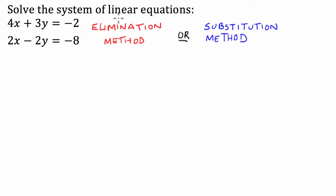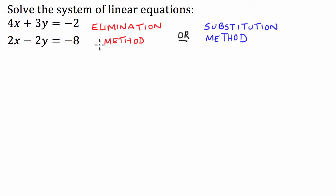So let's quickly describe what each of them requires us to do to solve the equations. The elimination method basically involves multiplying one of the linear equations by a number, which will allow us, when it's taken away or added to the other linear equation, to eliminate one of the variables. The substitution method involves rewriting or manipulating one of the linear equations so it expresses one variable in terms of another variable — in this case, x in terms of y or y in terms of x — and then substituting it in for the variable in the other equation.